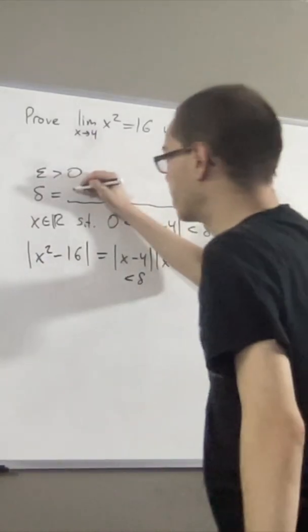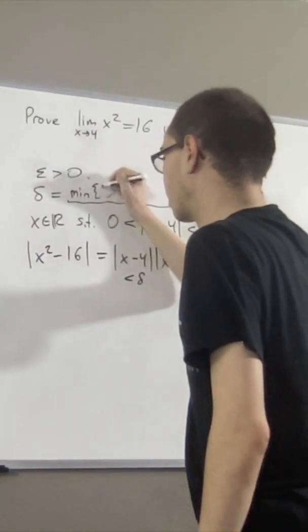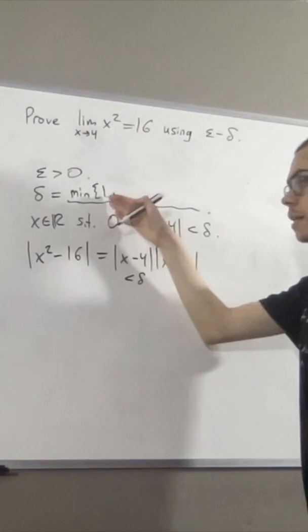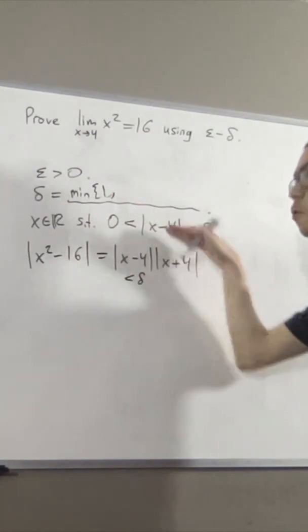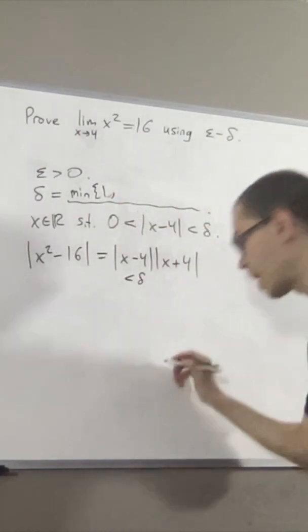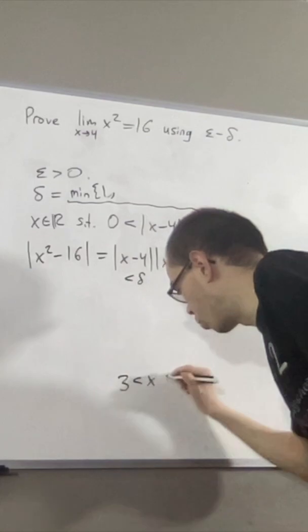For example, we can define delta so that delta is less than or equal to 1. In that case, the absolute value of x minus 4 is less than 1, which means x must lie between 3 and 5.